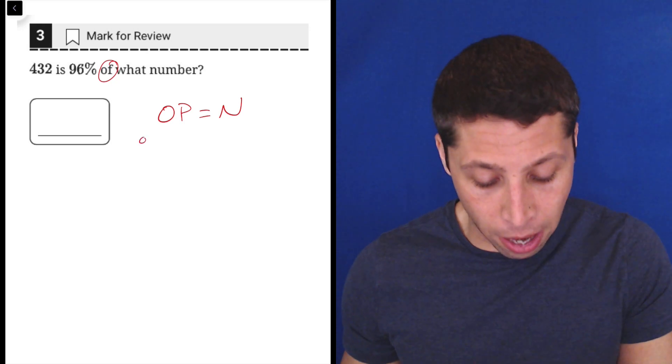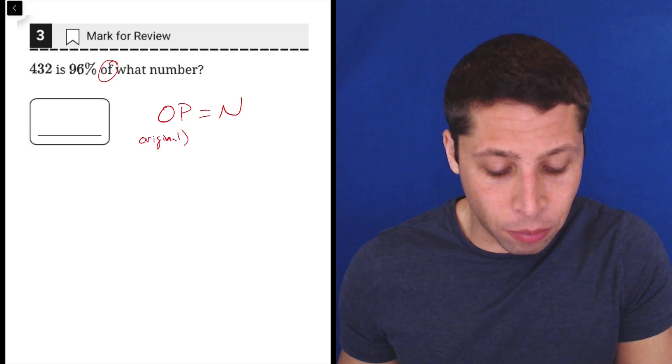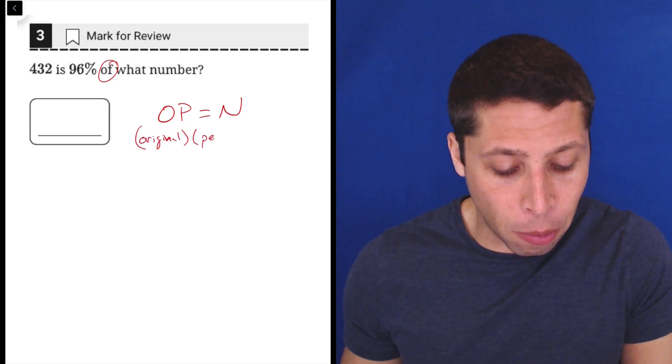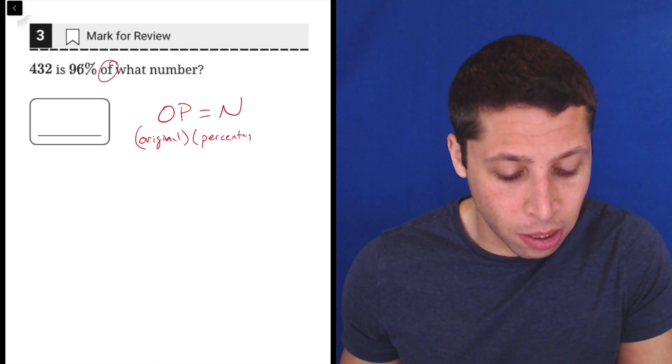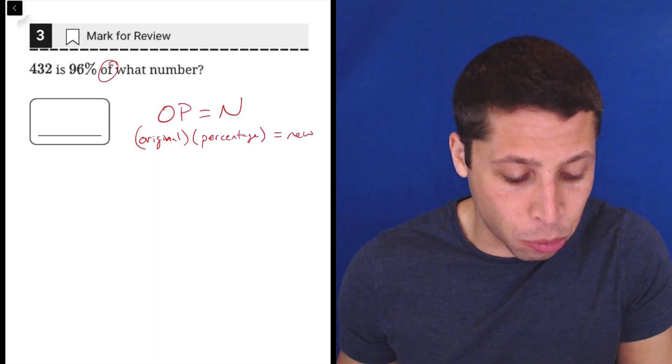Basically what it does is it lets us compare an original number or an original value by multiplying it by our percentage, and then that equals some sort of new value.